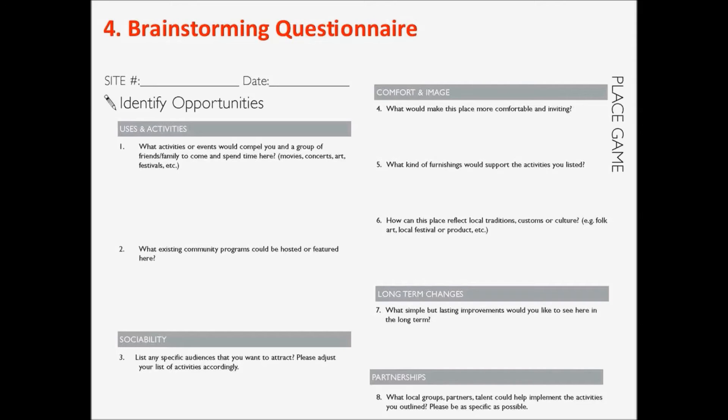The first question is about uses and activities — specifically, what events or activities would compel you and a group of family or friends to come and spend time at this location. We have some prompts: movies, concerts, art festivals, et cetera. The idea is that we want stakeholders to approach this as regular citizens, even if they have special knowledge — they may be designers, planners, event organizers, or park staff. We really want them to take off their work hat and think about what would attract them as a regular user: themselves, their friends, their family.